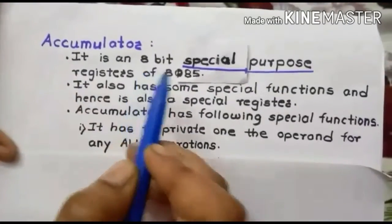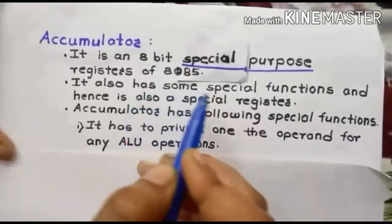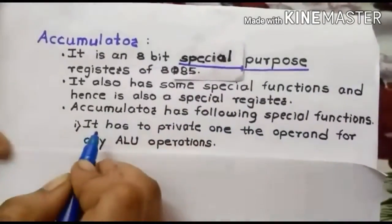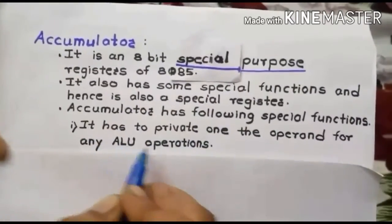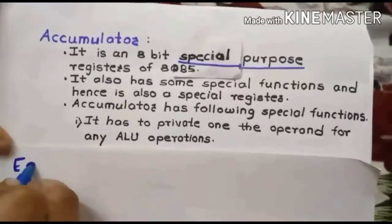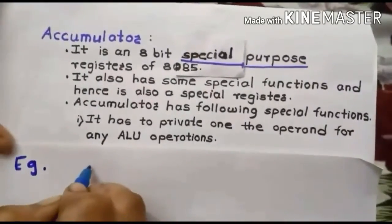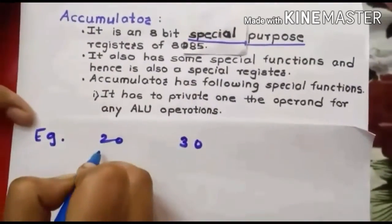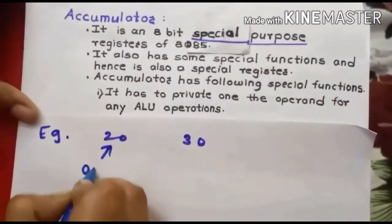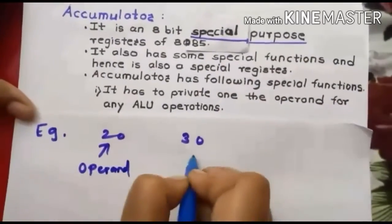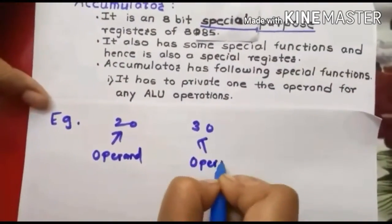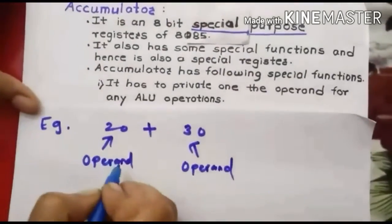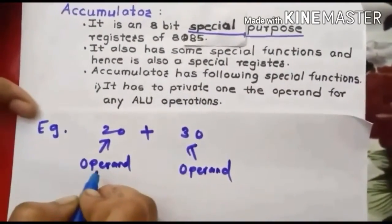The accumulator is an 8-bit special purpose register of 8085. We call it a special purpose register because it has some special functions. The first special function is that it must provide one operand for any ALU operation. For example, if we are taking two inputs 20 and 30 and we want to add them, 20 is one operand and 30 is the other.